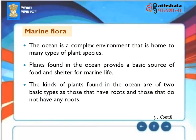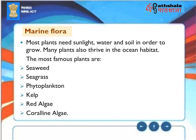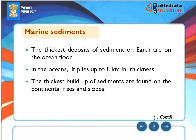Marine Flora: The ocean is a complex environment home to many types of plant species that provide basic food and shelter for marine life. Plants found in the ocean are of two basic types: those that have roots and those that do not. The most famous ocean plants include seaweed, sea grass, phytoplankton, kelp, red algae, and coralline algae.